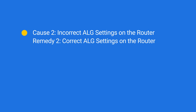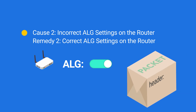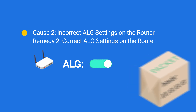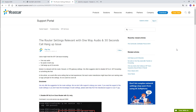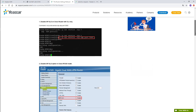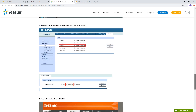Now let's move on to the second cause and correct the ALG setting on the router. ALG is a feature that helps voice devices traverse the NAT environment by modifying the IP address in SIP packet headers. If not configured correctly, the PBX or remote extension will send RTP packets to the wrong address. To fix this, simply make sure the ALG setting on the router is disabled. For settings on different router brands, refer to the articles in our knowledge base.